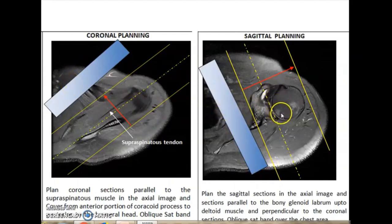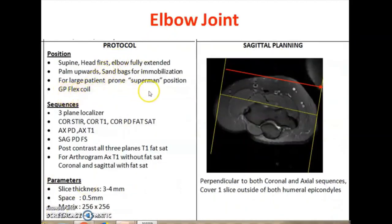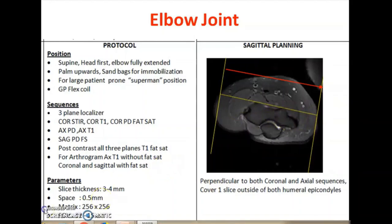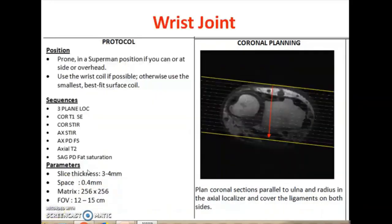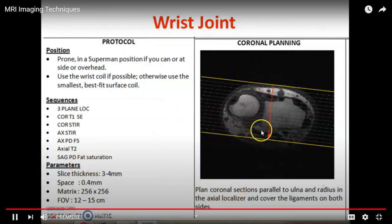The sagittal oblique plane is parallel to the bony glenoid labrum. For the elbow, flexible coils are used and the patient should be in the superman position — the flying position. Knee coils can also be used for elbow joints. Axial and sagittal planes are planned and correlated with coronal and axial planes. Surface coils or flexible coils can be used, and in three-plane localizers you plan the coronal planes parallel to the ulna and radius in axial localizers to cover the ligaments on both sides.